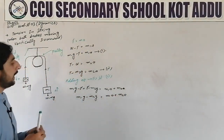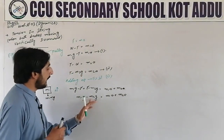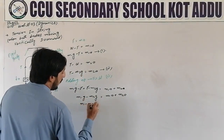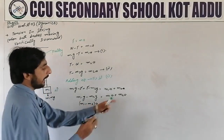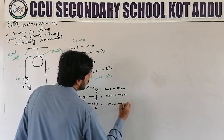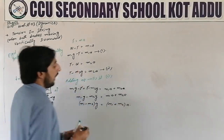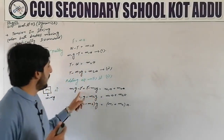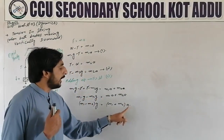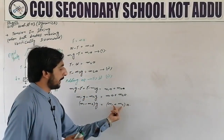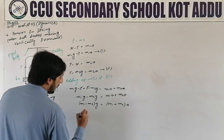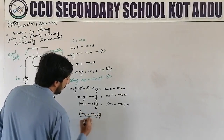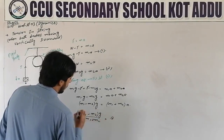Taking g common on the left side: (m1 minus m2) times g. Taking a common on the right side: (m1 plus m2) times a. Since tension is eliminated, we solve for acceleration. Therefore, a = (m1 minus m2) times g divided by (m1 plus m2).